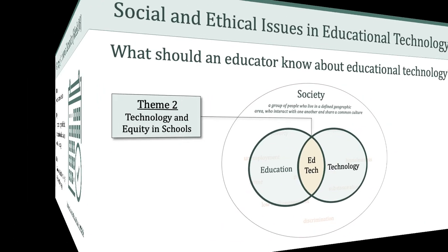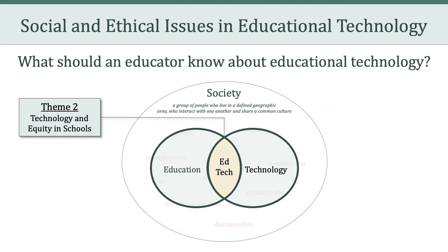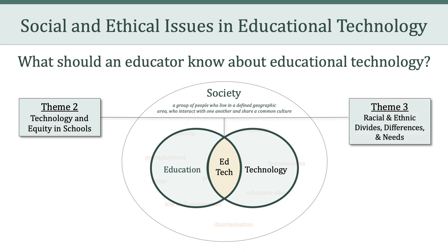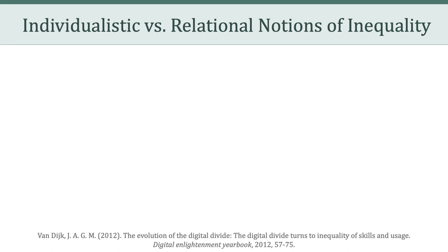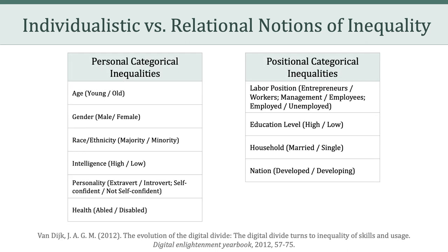In this session, we're going to transition from theme two, technology and equity in schools, to start talking about racial and ethnic divides and differences in needs, which will be our third theme of the semester. To do this, we're going to shine a light on some of the underlying social problems that we talked about in the beginning of the semester. I want to talk about Von Dake's individualistic versus relational notions of inequality.